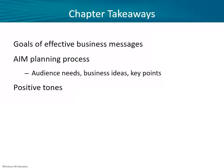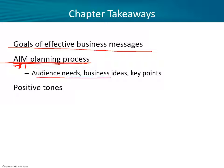To wrap up this chapter: we covered the goals of effective business messages and why it's important to have clear goals. We talked about the AIM planning process — audience, information, and message development; audience needs, business ideas, and key points. And we covered the importance of striking the right tone — positive tone should be your default, though sometimes you don't want to seem positive when delivering bad news. The real goal is to make sure the tone is appropriate for the message in question. If you have questions, comments, or stories you'd like to share, I'd love to read those. I'll see you next time.